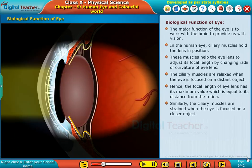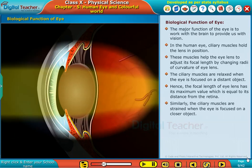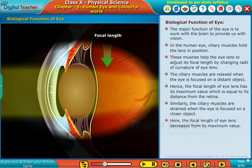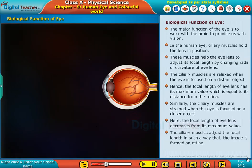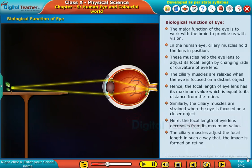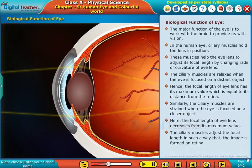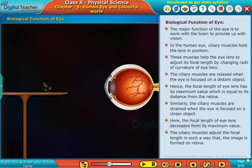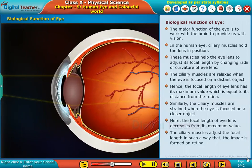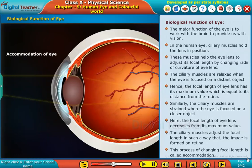Similarly, the ciliary muscles are strained when the eye is focused on a closer object. Here, the focal length of the lens decreases from its maximum value. The ciliary muscles adjust the focal length in such a way that the image is formed on the retina. This process of changing focal length is called accommodation.